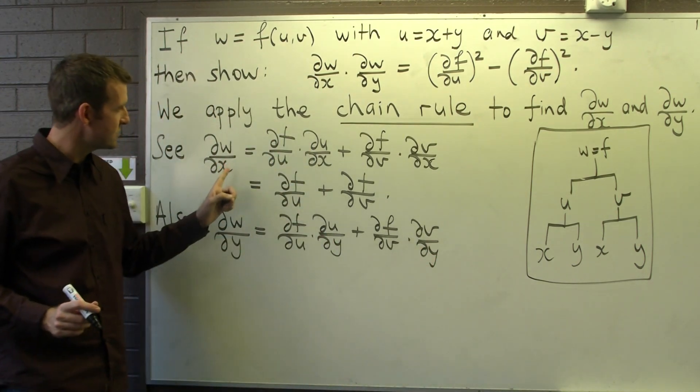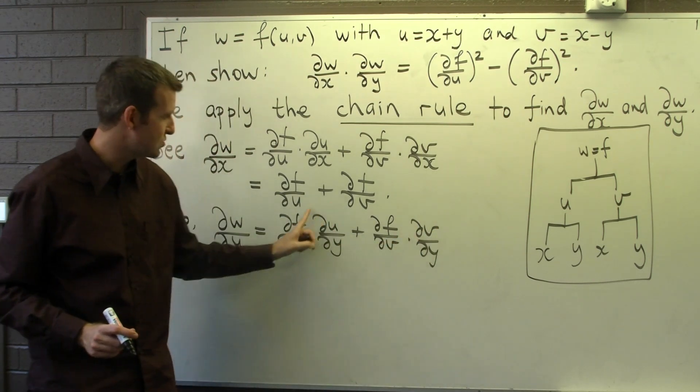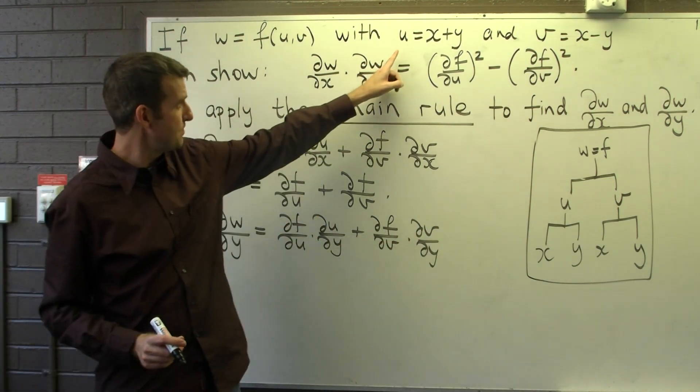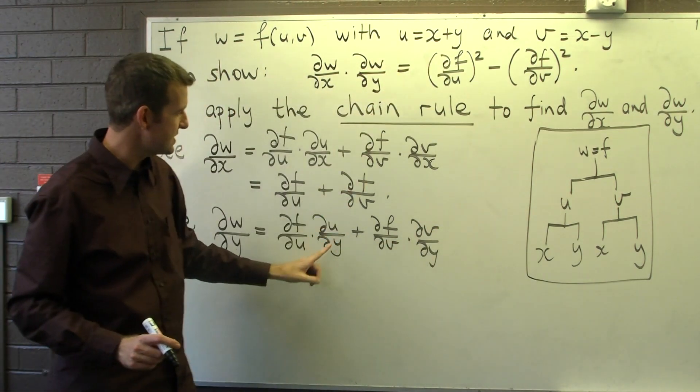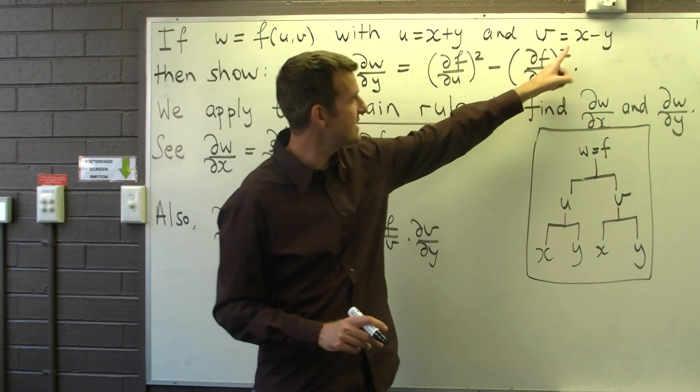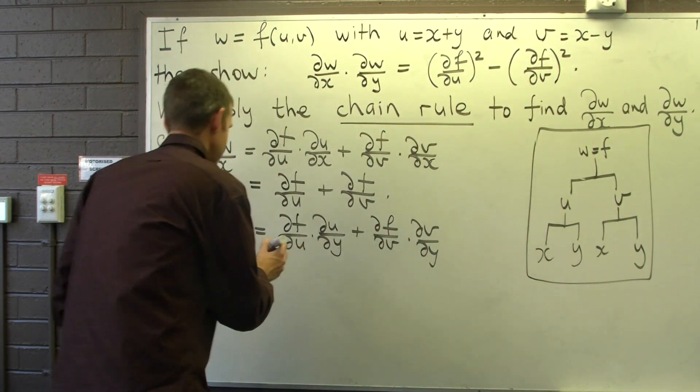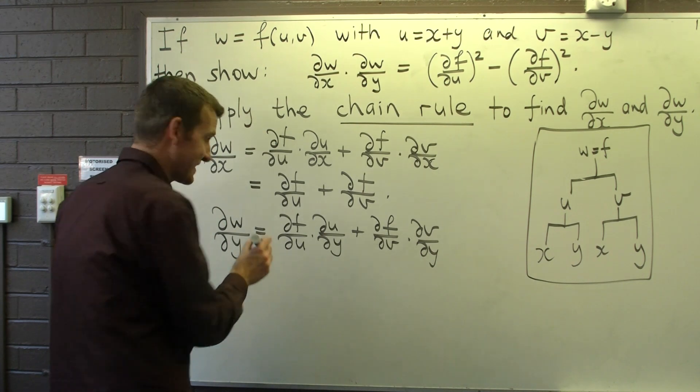And again, similar to the case for ∂w/∂x, we can simplify these particular derivatives. If u is x plus y, what is ∂u/∂y? One. And if v is x minus y, what will ∂v/∂y be? Minus one. So we end up with something like this.